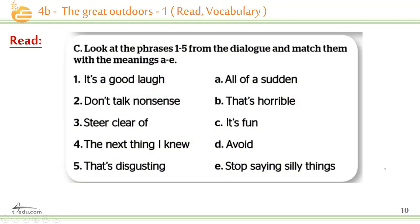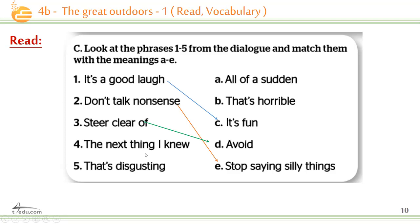Look at these phrases one to five from the dialogue and match them with the meaning. 'It's a good laugh' means it's fun — they're having fun. 'Don't talk nonsense' means stop saying silly things. 'Steer clear of' Thunderbolt means avoid. 'The next thing I knew' means all of a sudden — suddenly. 'That's disgusting' means that's horrible.